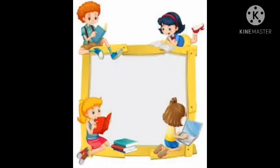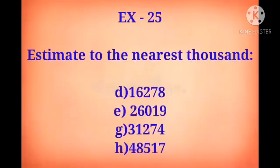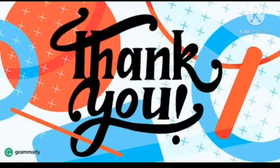This is the homework: in Exercise 25, Number 3 — estimate to the nearest thousand: D sum 16,278; E sum 26,019; G sum 31,274; and H sum 48,517. I hope you understand today's concept. Thank you, children.